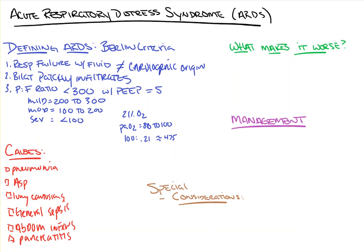ARDS can be made worse by a number of mechanisms, especially those related to positive pressure ventilation. High tidal volume — high VT — and high peak and plateau pressures can really make it worse because of volume and barotrauma to the lung. Every time the alveoli open and collapse and reopen and collapse, there are shearing stresses that can further damage that tissue.